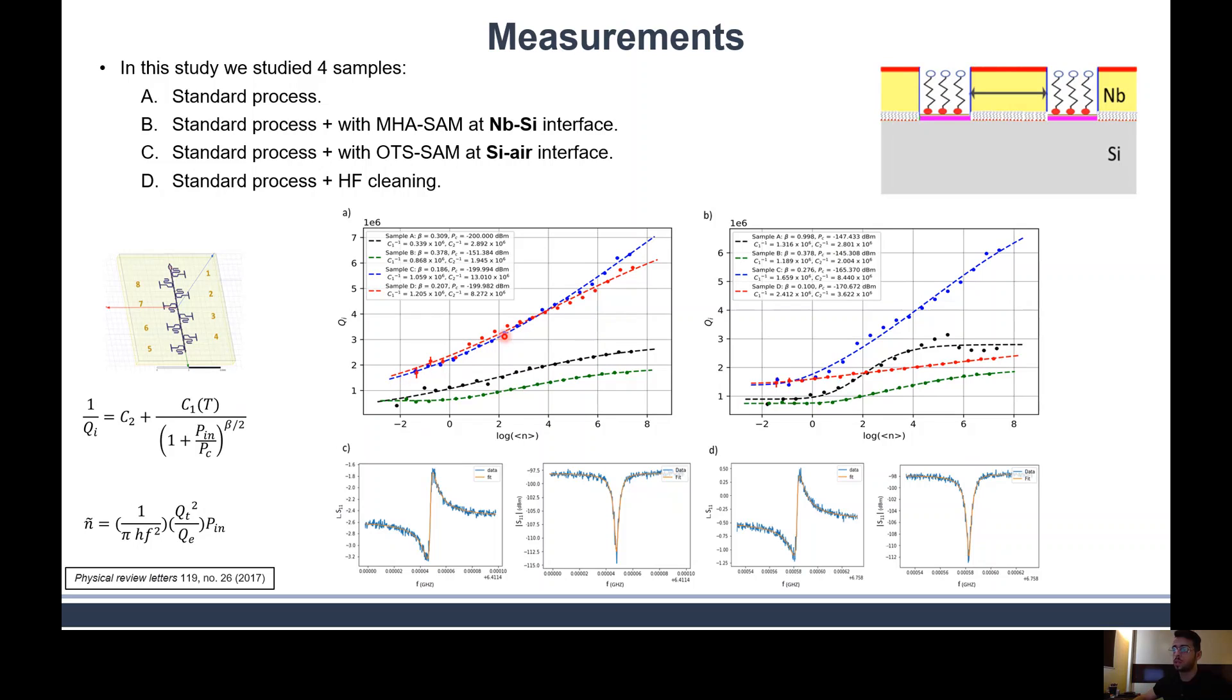We can see an improvement in the quality factor versus photon number, average photon number, in the case where we put SAM at the silicon-air interface, which is shown in this graph for the second resonator and this graph for the seventh resonator. The improvement is in all of the resonators, but if we clean only the surface without putting SAM there, we will not have the general improvement over all the chip. C and D show the single photon excitation power signals, which is at this point.